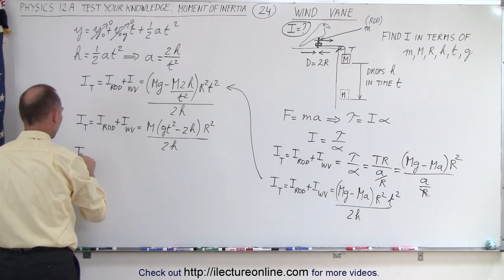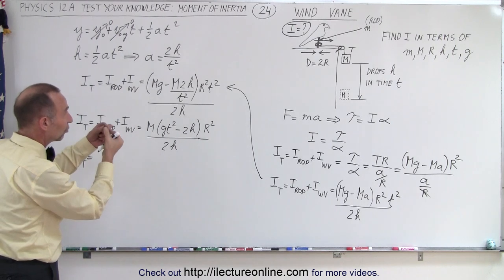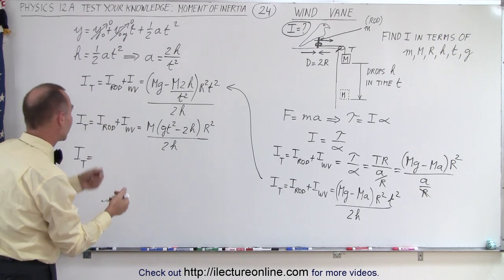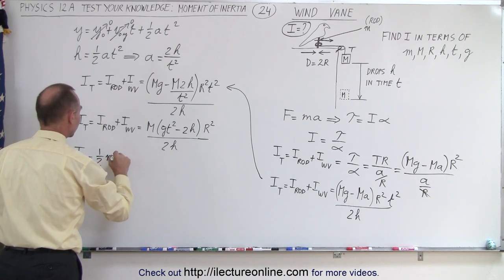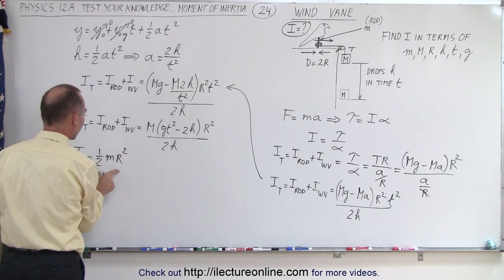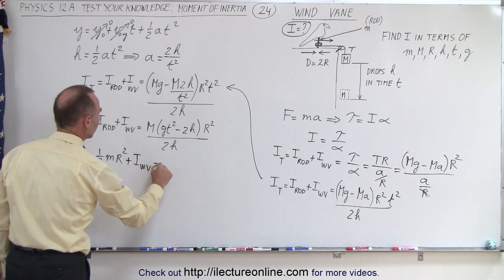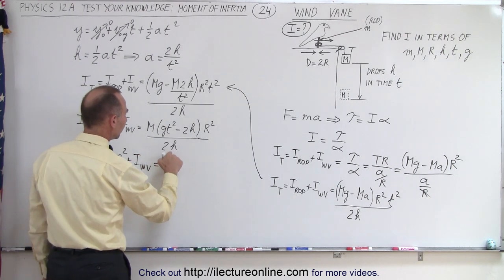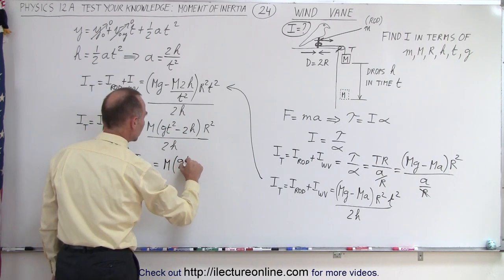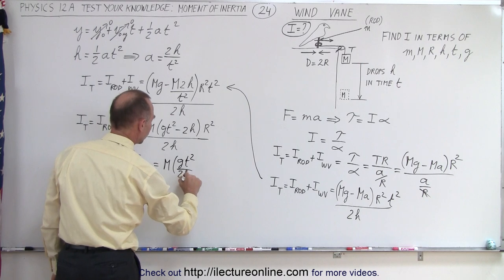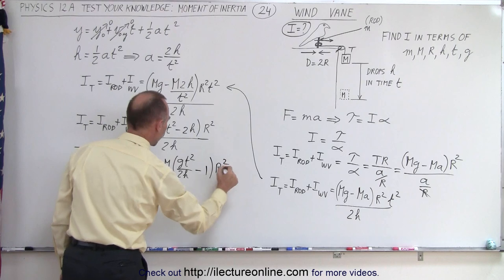Now I_total equals I_rod. I'll calculate I_rod — it's a solid cylinder, so I_rod equals one-half the mass of the cylinder times the radius squared. So I_rod plus I_wind_vane equals, dividing that in, M times (g t squared over 2h minus 1) times r squared.